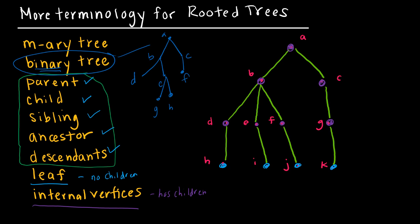An M-ary tree is like a three-ary or four-ary tree — a binary tree is a two-ary tree. We call it binary because we have a specific name for it. If a node had 47 branches, we'd call it a 47-ary tree. That is the terminology we'll use for rooted trees.